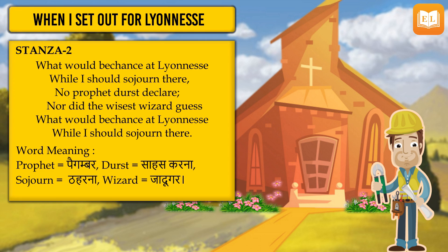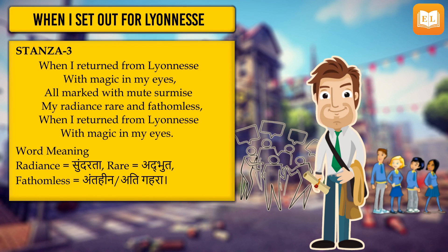Friends, maine aapko pehle bataya tha ki poet ne is poem ko teen stanzas mein divide kiya hai. In the first stanza, woh hume apne trip ki starting ke baare mein batate hain; second stanza mein, between the trip ke time ke baare mein; aur in the third stanza, when he is coming back. So now we know he is returning from Lyonnesse, and we are going to read stanza three.